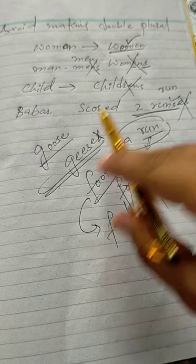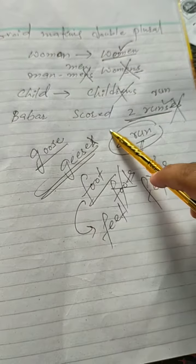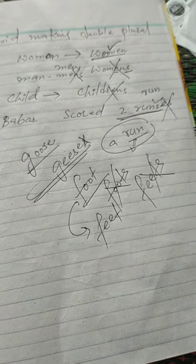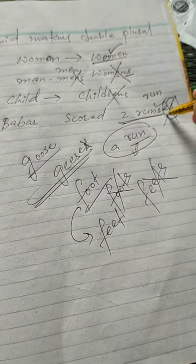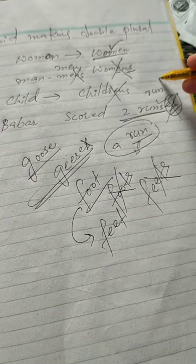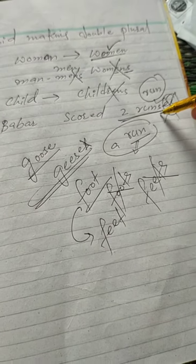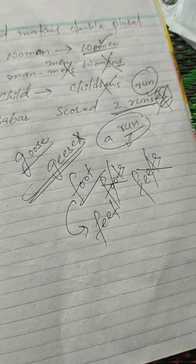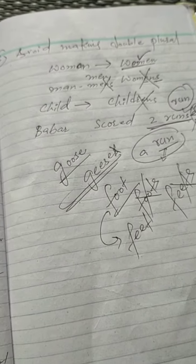We have got 'barber scored two runs.' If we write 'runces' here, then the sentence is wrong. 'Runces' is not going to happen. 'Run' is singular, 'runs' is plural. 'Runces' is an error — we do not do double plural.